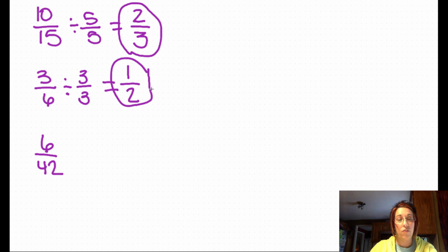And 6/42. Well, 6 will go into 42. So I'm going to use that as my GCF. 6 divided by 6 is 1. 42 divided by 6 is 7. So 1/7.